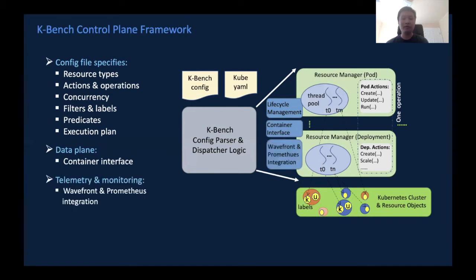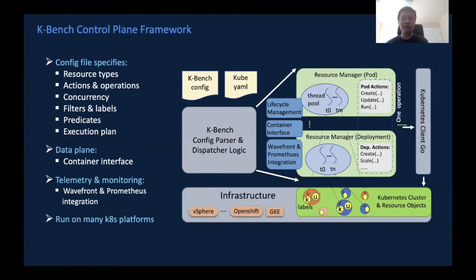Let's look at the overall design framework. Here is a running Kubernetes cluster with a bunch of objects. KBench accepts a KBench config file along with standard Kubernetes YAML files. The Kubernetes config parser and dispatcher logic is responsible for parsing those config files. Depending on what type of resources you configure to measure and benchmark, it generates a list of resource managers. Each resource manager is responsible for managing the lifecycle, events, and metric collection for a particular resource type. For example, a pod resource manager would be responsible for managing pod resources. You can specify for each resource type what actions and operations you want to run. You can put them together in one operation and those actions for different resource types will run in parallel, but the action chain for one particular resource type will run sequentially. You can specify concurrency, and the resource manager will maintain a thread pool of the appropriate size for that resource type. We also integrate Prometheus and Wavefront for resource monitoring and triage purposes.